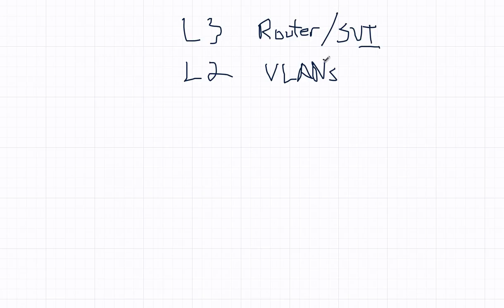So in traditional networking, we've got a default gateway. We have layer three and layer two. Layer two is primarily VLANs, and layer three is routers, or a lot of times they're actually SVIs on multilayer switches.